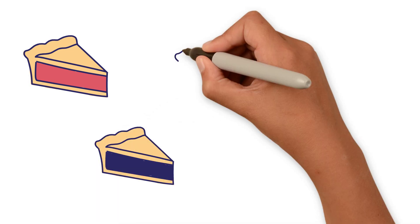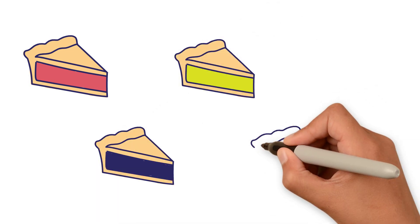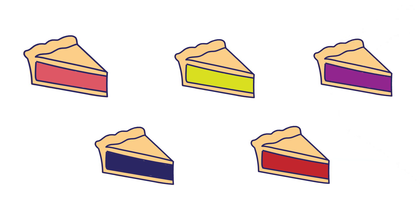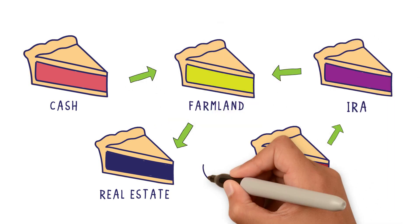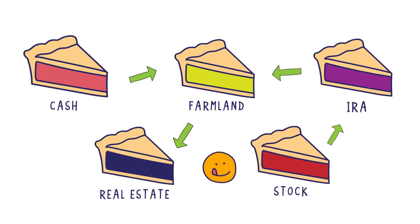Choosing the gift to give to an Endow Iowa fund is just like picking your favorite flavor. There are a variety of options including cash, real estate, farmland, stock, and retirement assets. You can also mix it up and create a combination to best meet your taste.